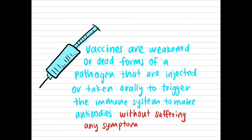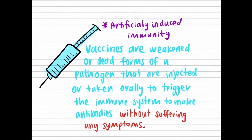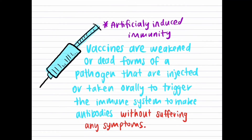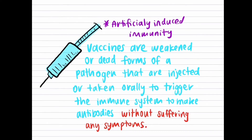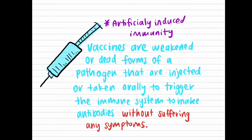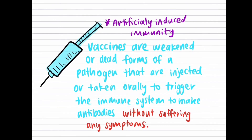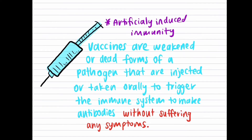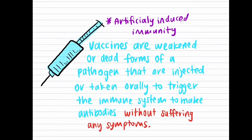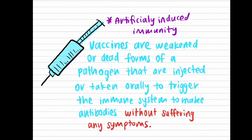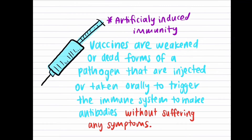The use of vaccines develops an artificially induced immunity, and is beneficial as the individual does not experience any symptoms of the disease. However, a downside is that new vaccines must be produced and taken if the pathogen can mutate quickly and produce new strains — such as the flu caused by a virus. Since this virus mutates regularly, a new flu shot must be taken every year.